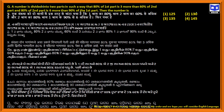A number is divided into two parts in such a way that 80 percentage of the first part is three more than 60 percentage of the second part, and 80 percentage of the second part is six more than 90 percentage of the first part. Find the number.